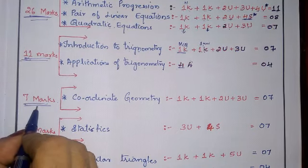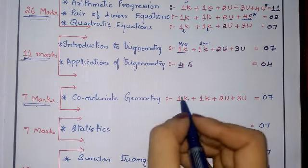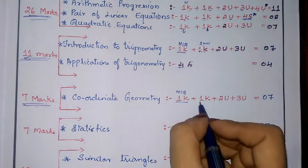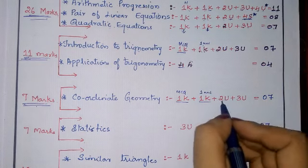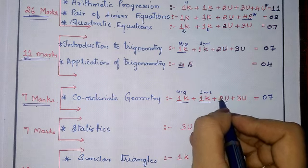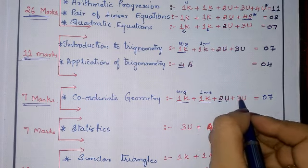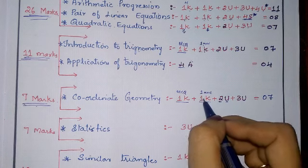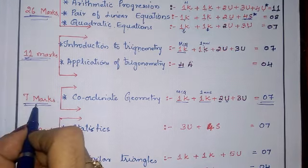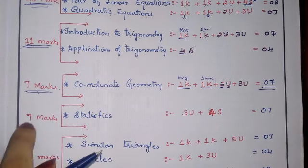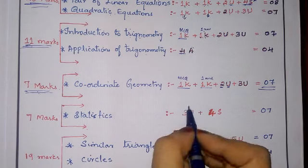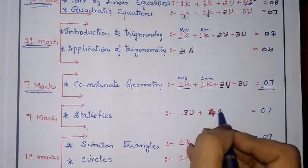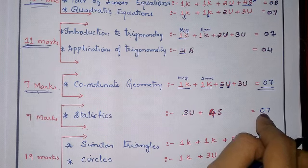From Coordinate Geometry — 7 marks: 1 MCQ (knowledge), 1 one-mark knowledge question, 1 two-mark understanding question, and 1 three-mark understanding question. From Statistics — 7 marks: 1 one-mark question, 1 three-mark understanding question, and 1 four-mark skill question. Total 7 marks from statistics.